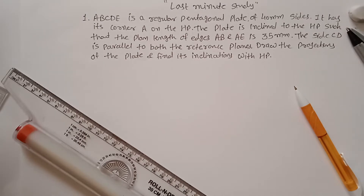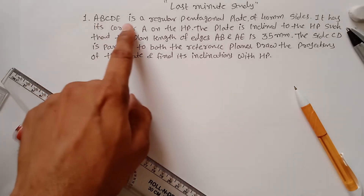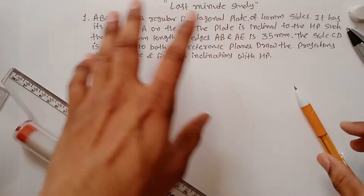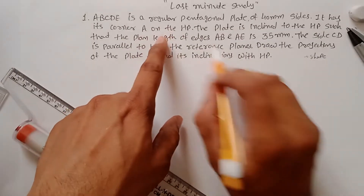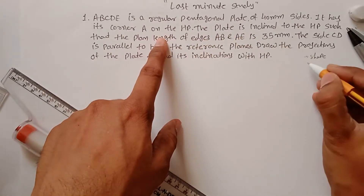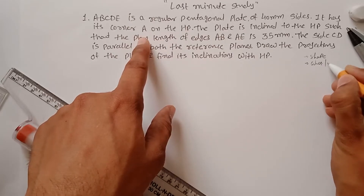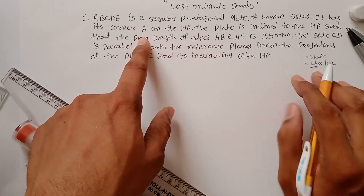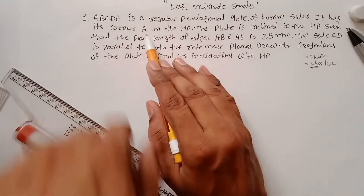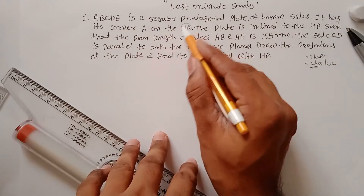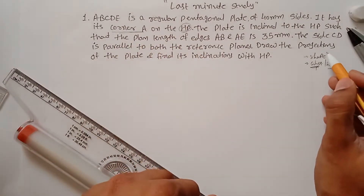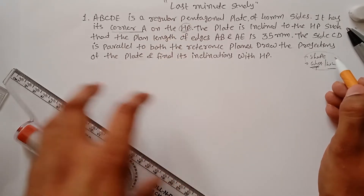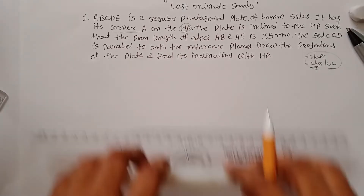Problem number one from projection of plane sheet. ABCDE is a regular pentagon plate. In any projection of plane, you have to identify first the shape of your plane — in this case, the plane is a pentagon. Next, find out where and how it is positioned. It has its corner A on the HP, meaning it is resting on HP with its corner.